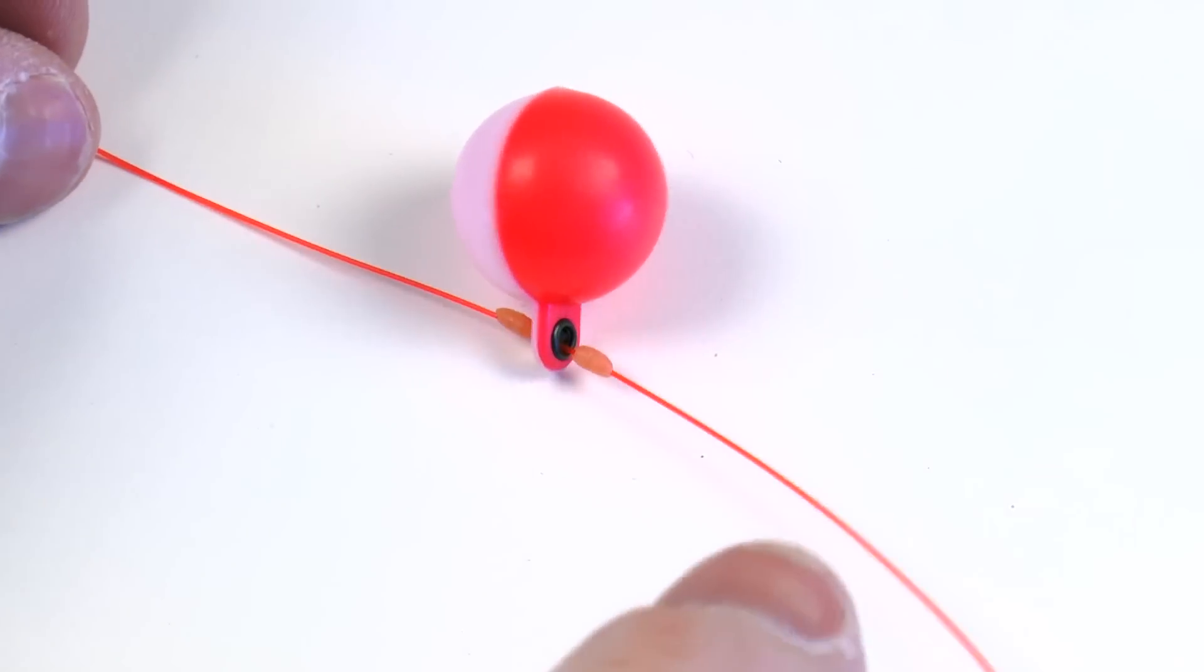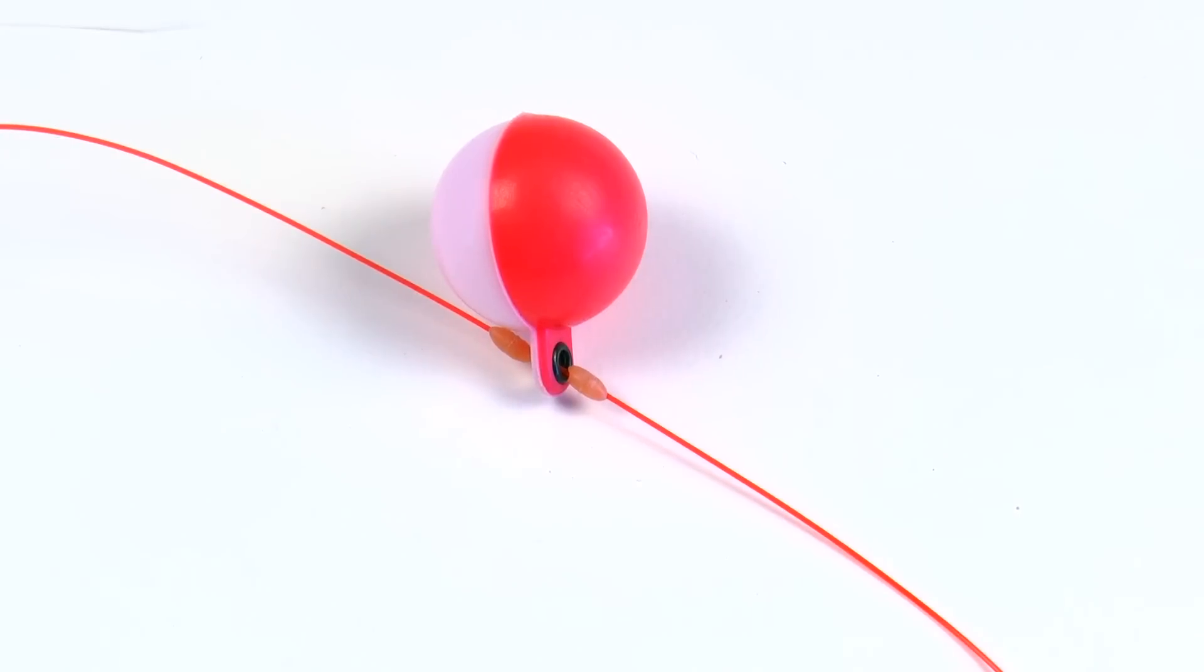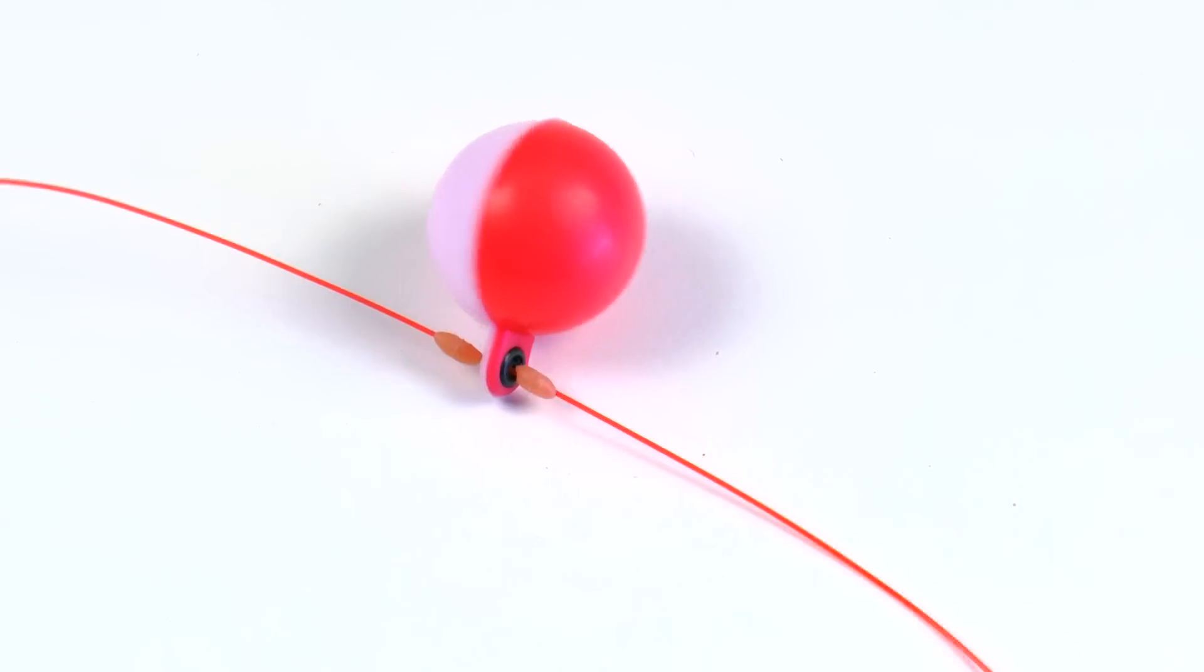And you can find all the materials to make this, both the frog hair indicator retainers, and also thingamabobbers, on our website, intheriffle.com.